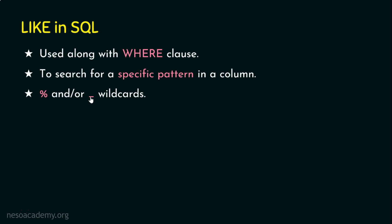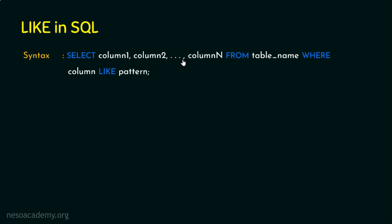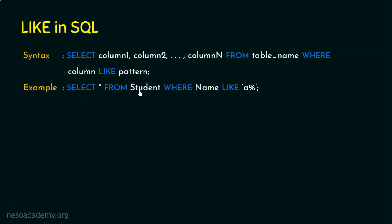The syntax is: SELECT column1, column2, ... columnN FROM table_name WHERE column LIKE 'some pattern'. For example: SELECT * FROM student WHERE name LIKE 'a%'. What we are doing here is retrieving all records from the student table where the name column contains a value starting with 'a'. So we are performing pattern matching.